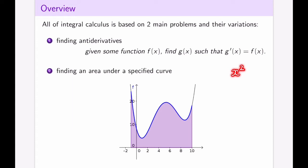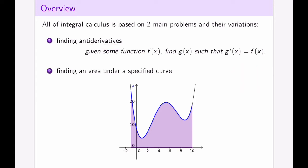If I have to take a derivative of x squared, I will end up with 2x, and the reverse process is called antiderivation, which is generally more complex and is something we're going to come back to towards the end of this course.